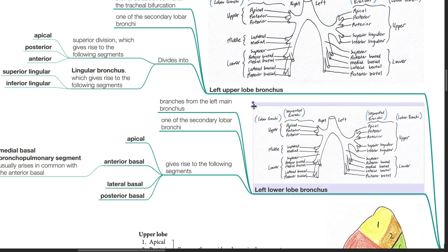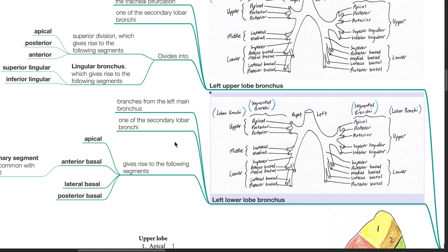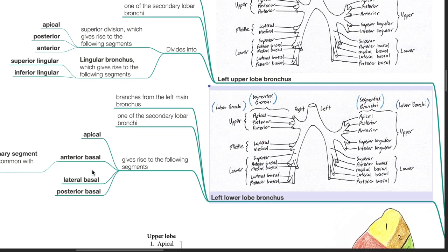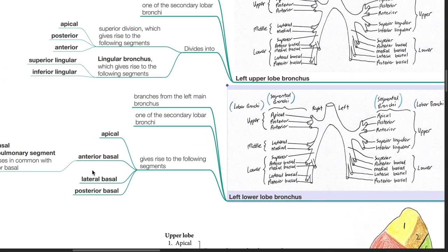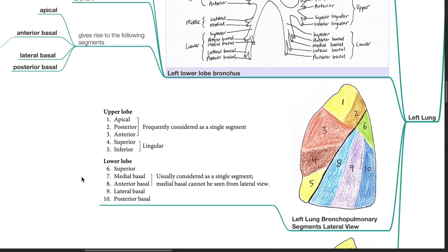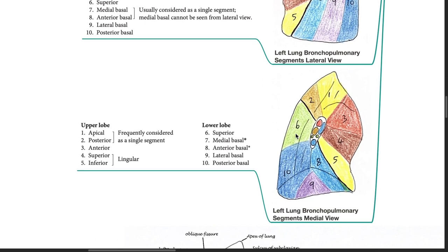The left lower lobe bronchus branches from the left main bronchus and is one of the secondary lobar bronchi. It gives rise to the apical, anterior basal, lateral basal, and posterior basal segments. The medial basal bronchopulmonary segment of the left lung usually arises in common with the anterior basal. This diagram shows the left lung bronchopulmonary segments in lateral view and medial view.